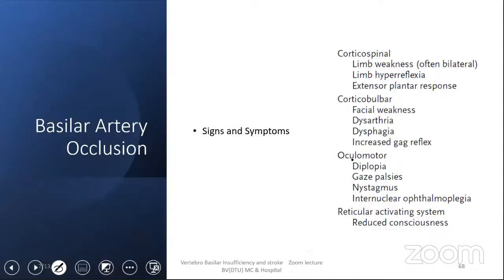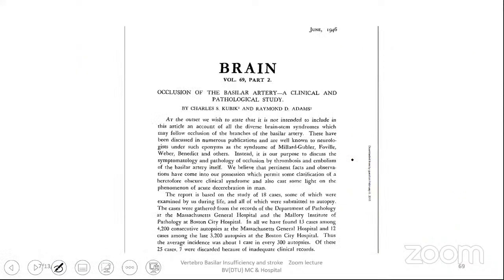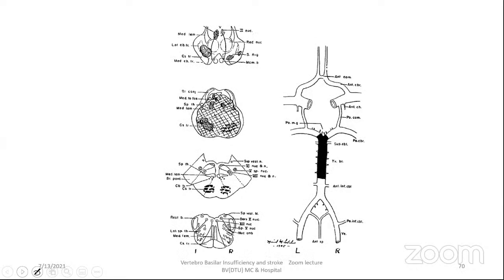Grouping the posterior circulation stroke features: corticospinal involvement causes limb weakness, hyperreflexia, and extensor plantar responses; corticobulbar involvement causes facial weakness, dysarthria, dysphagia, and increased jaw reflex; oculomotor fiber affliction causes diplopia, gaze palsies, nystagmus, and internuclear ophthalmoplegia; reticular activating system involvement causes reduced consciousness. These features of basilar artery occlusion were first described by Kubik and Raymond Adams in 1946 — an important foundational paper. The documented infarct areas in basilar artery occlusion from their original cases: Case 1 — thrombosis with sudden paresthesia, unsteady gait, diplopia, then drowsiness, stupor, ptosis, unequal pupils, conjugate gaze paralysis, bilateral extensor reflexes, improvement then recurrence with quadriplegia and coma, leading to death on day 8.